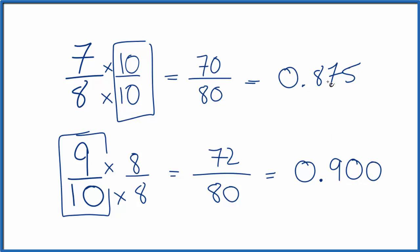0.9 is larger than 0.875. So 9/10 is larger than 7/8. This is Dr. B comparing 7/8 to 9/10. Thanks for watching.